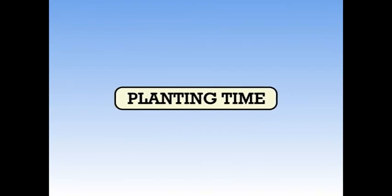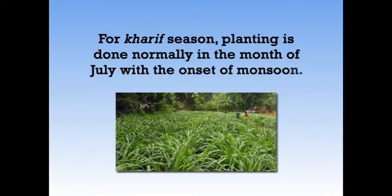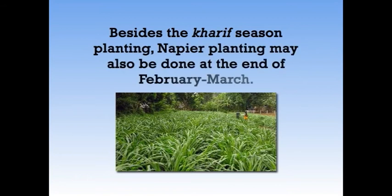We will see what is the optimum planting time. For kharif season, planting is done normally in the month of July with the onset of monsoon. Besides kharif season planting, Napier planting may also be done at the end of February and March.